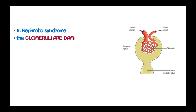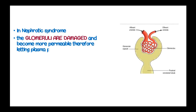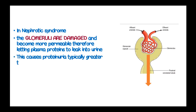In nephrotic syndrome, the glomerulus is damaged and becomes more permeable, letting plasma proteins leak into urine. This leakage causes proteinuria, which is greater than 3.5 grams per day.